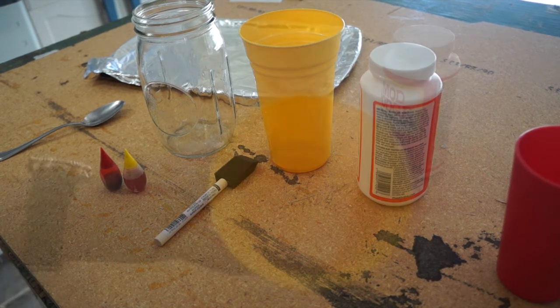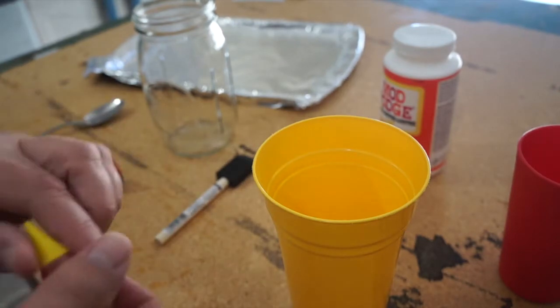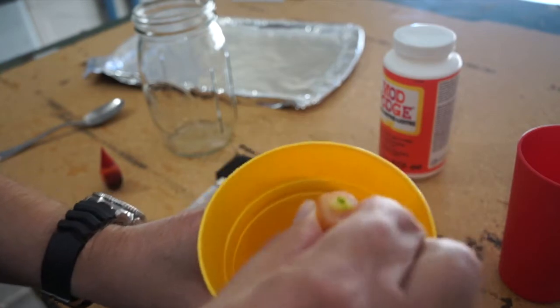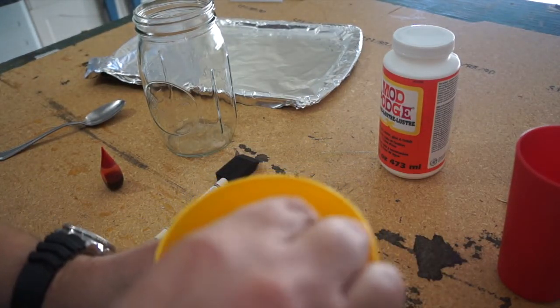So let's get started. First step, I've poured some glue into my mixing cup. Now, you want to get the colors as deep as possible, so you're going to be using quite a bit of the food coloring.